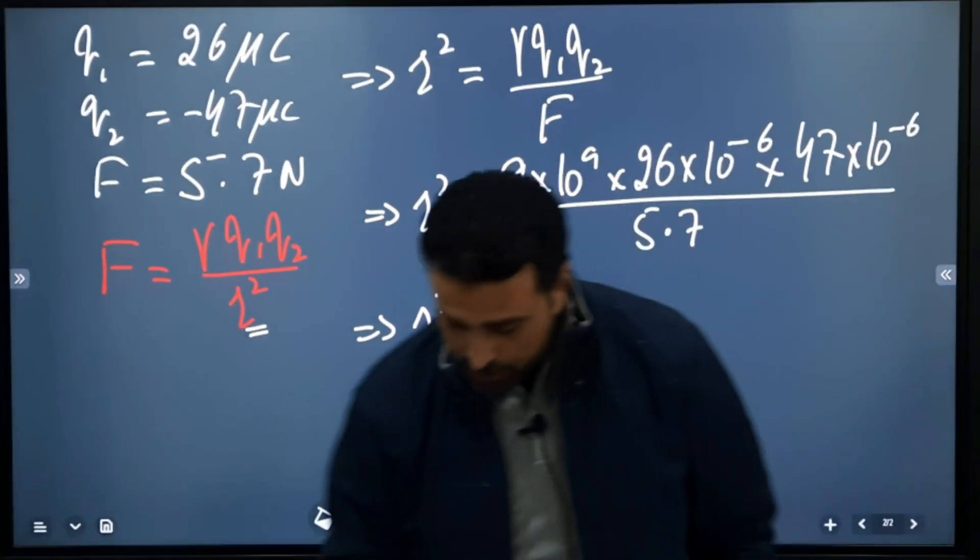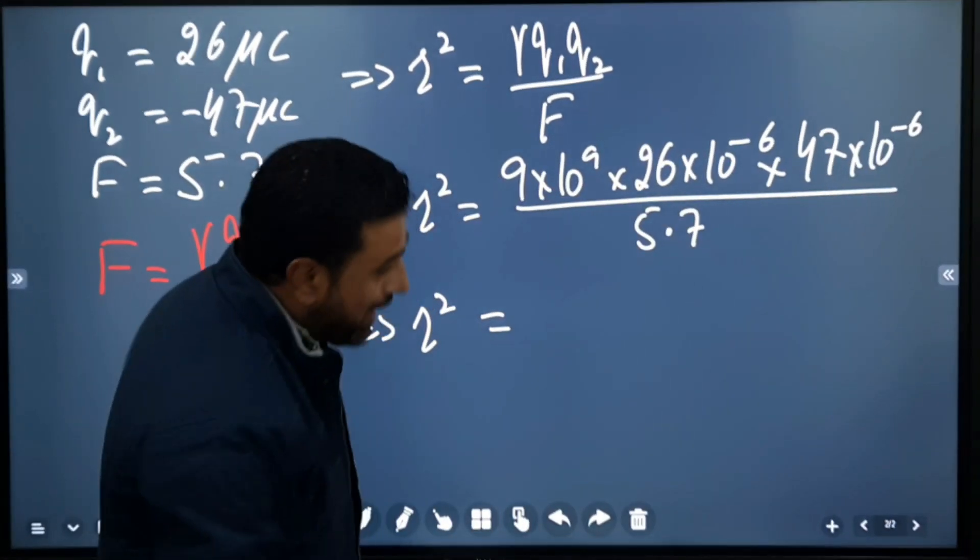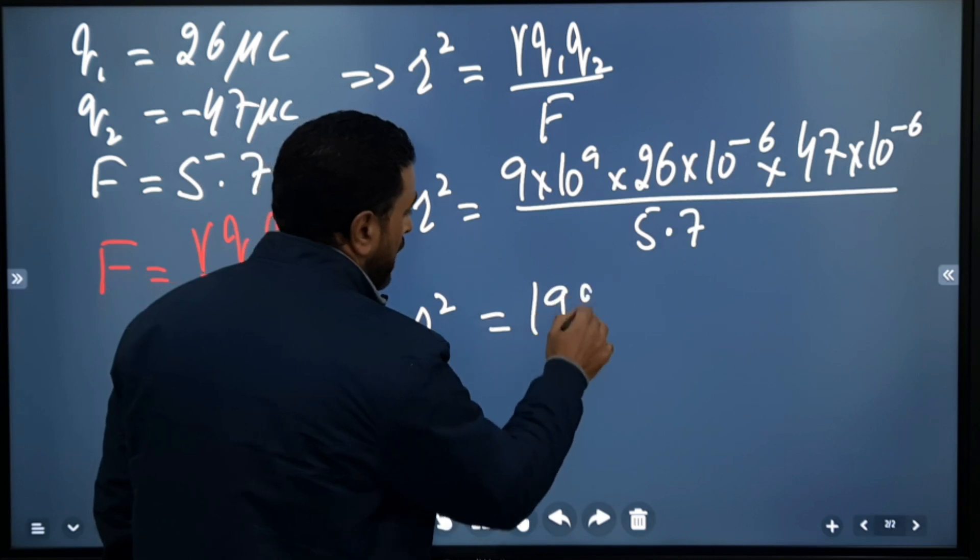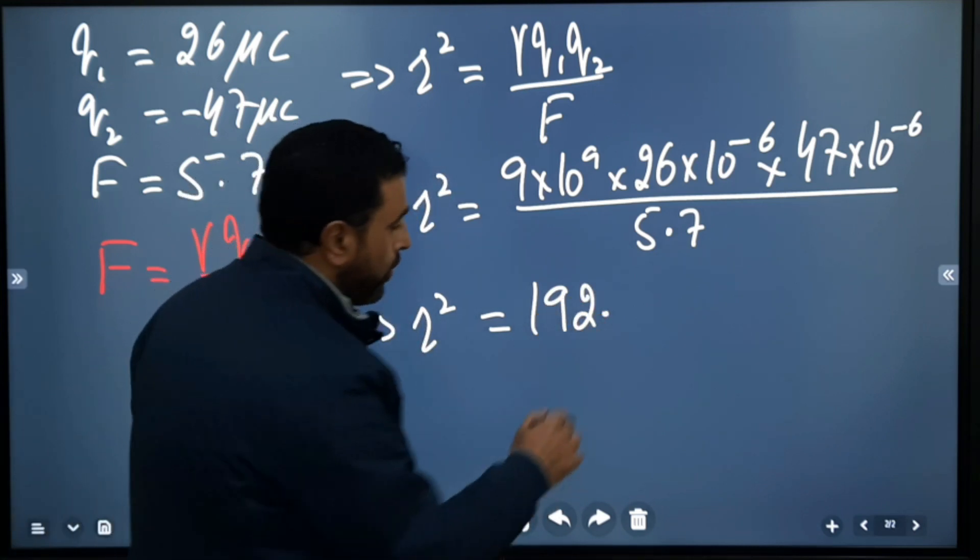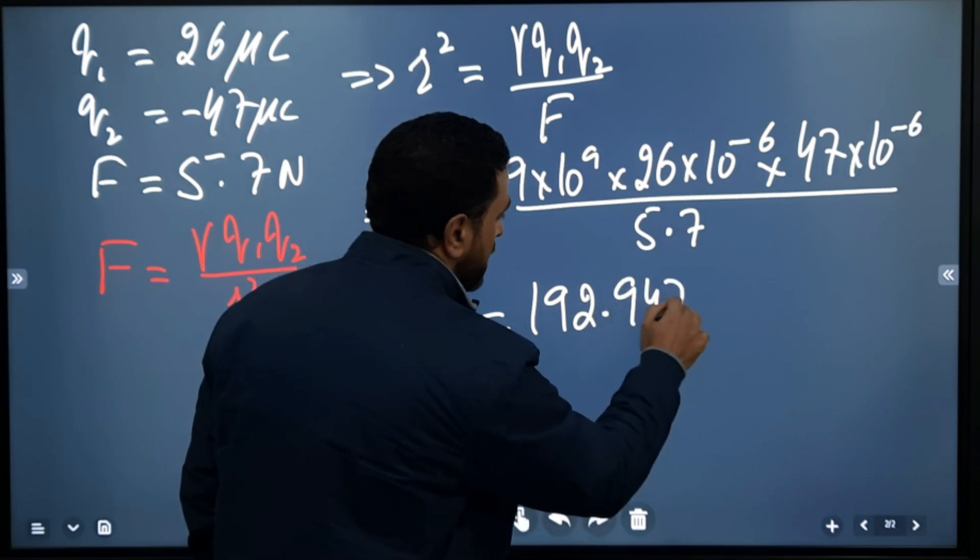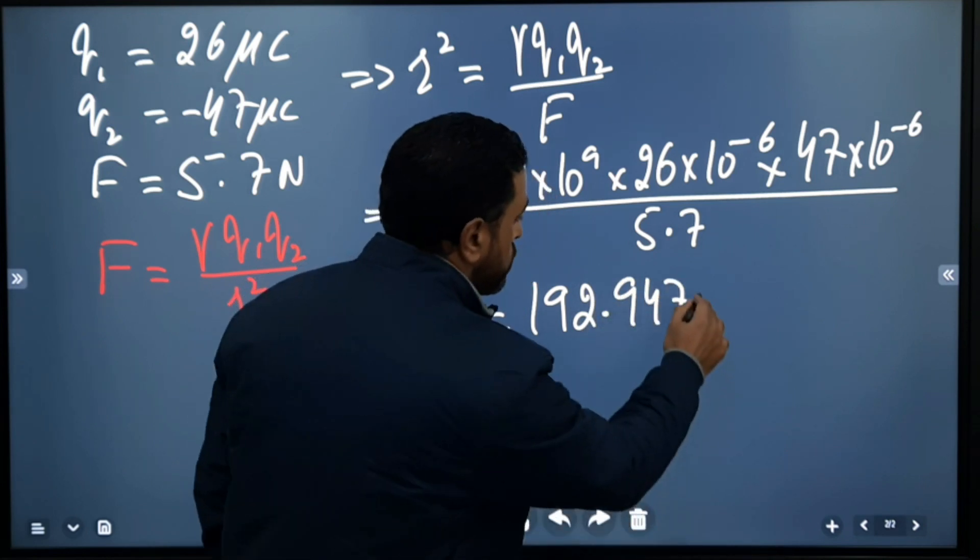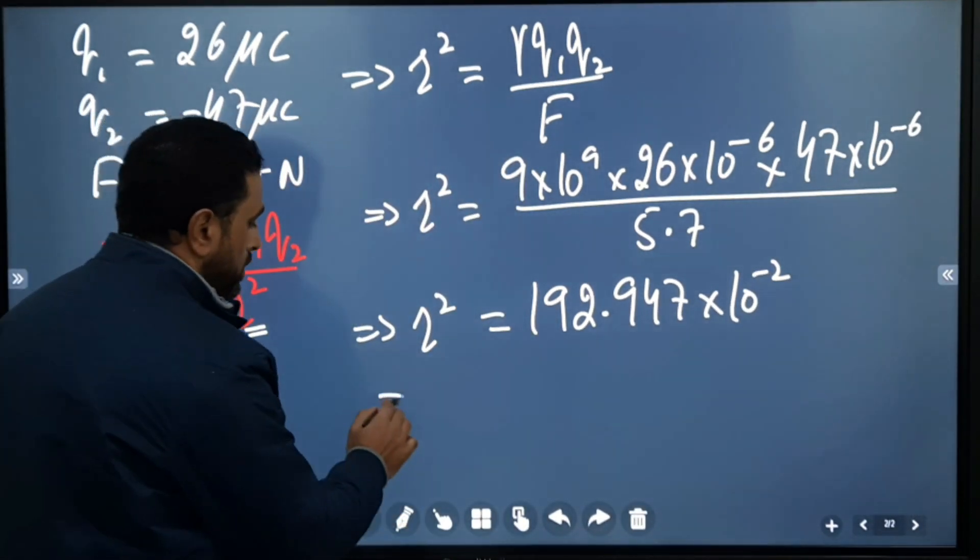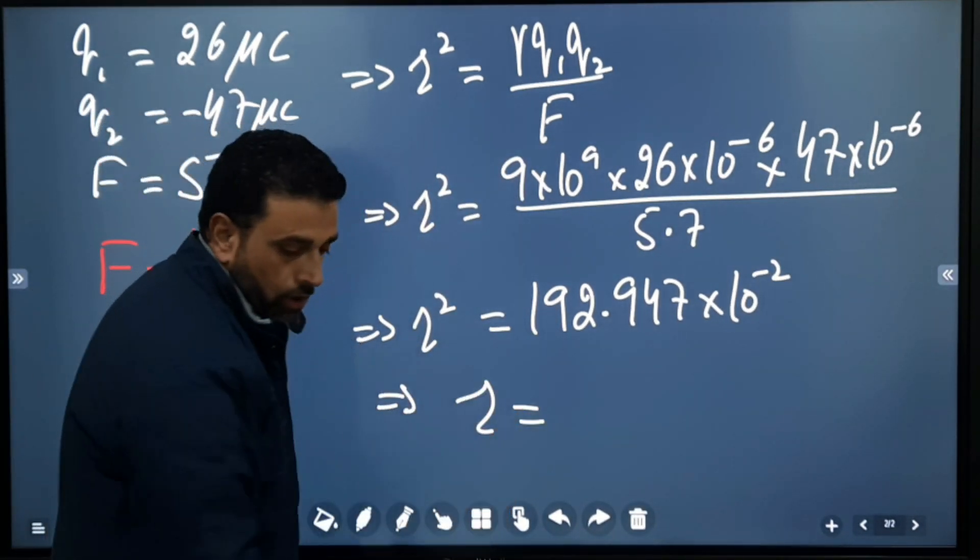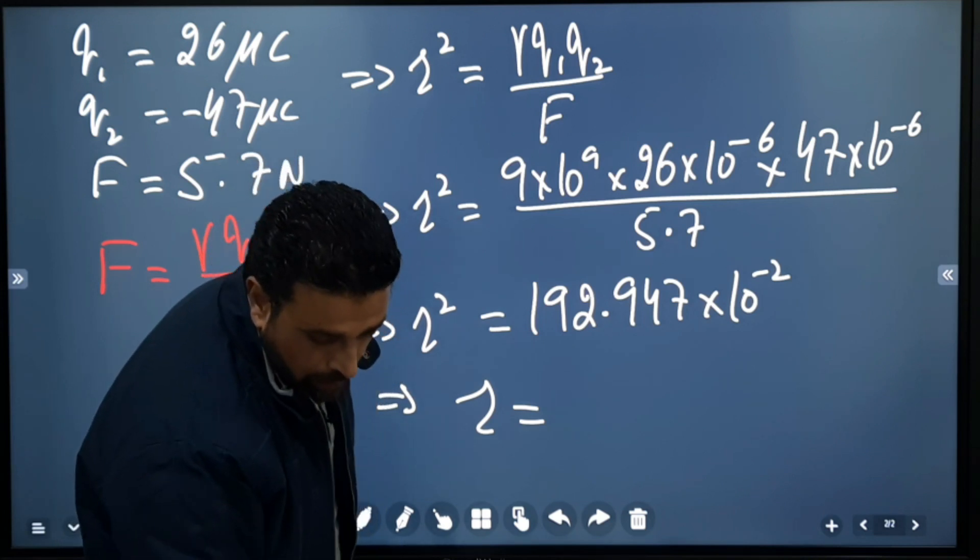So this implies r² after solving—I already worked this out—comes out to be 192.947 × 10⁻². So this means r is equal to roughly 1.389.